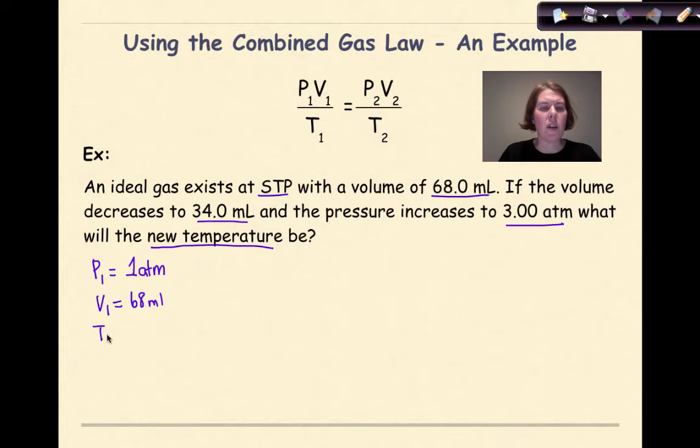And my T1, that goes back to the STP, meaning standard temperature and pressure. And remember, on table A of your reference table, standard temperature and pressure are defined: 1 atmosphere, 101.3 kPa, and 273 Kelvin. So I have my P1, my V1, and my T1. My P2 here is listed at 3 atmospheres. My V2 is listed as 34 milliliters. And I'm solving for the new temperature, so I'm solving for T2. This is going to be technically my x, my variable that I'm looking for.